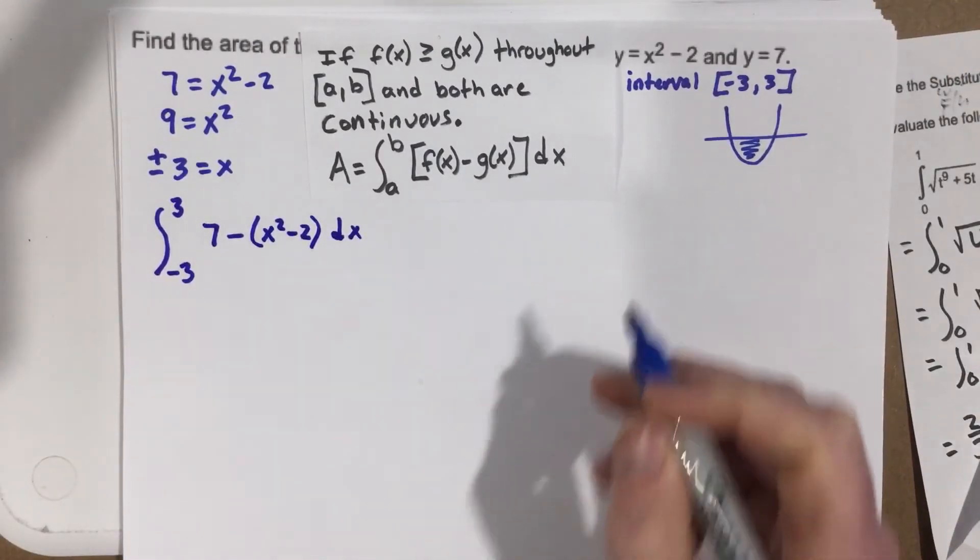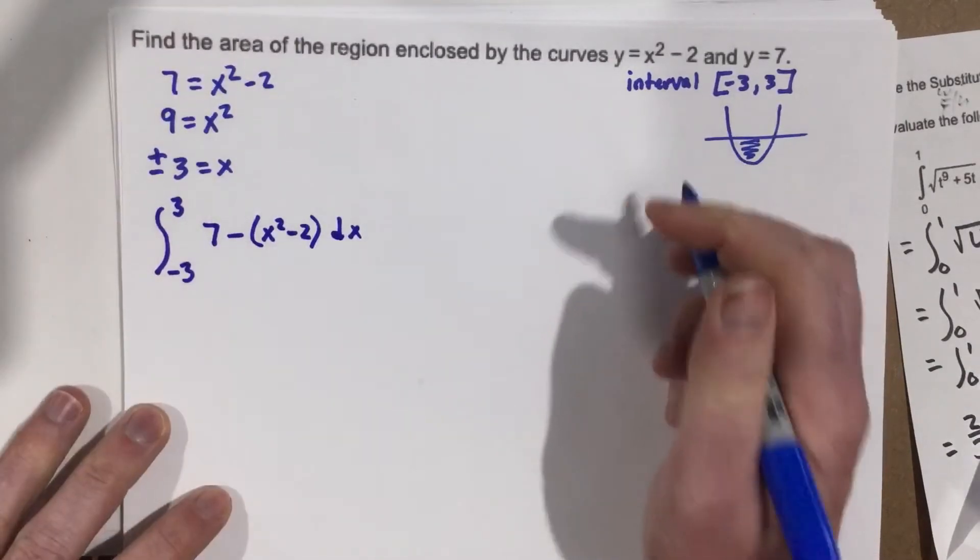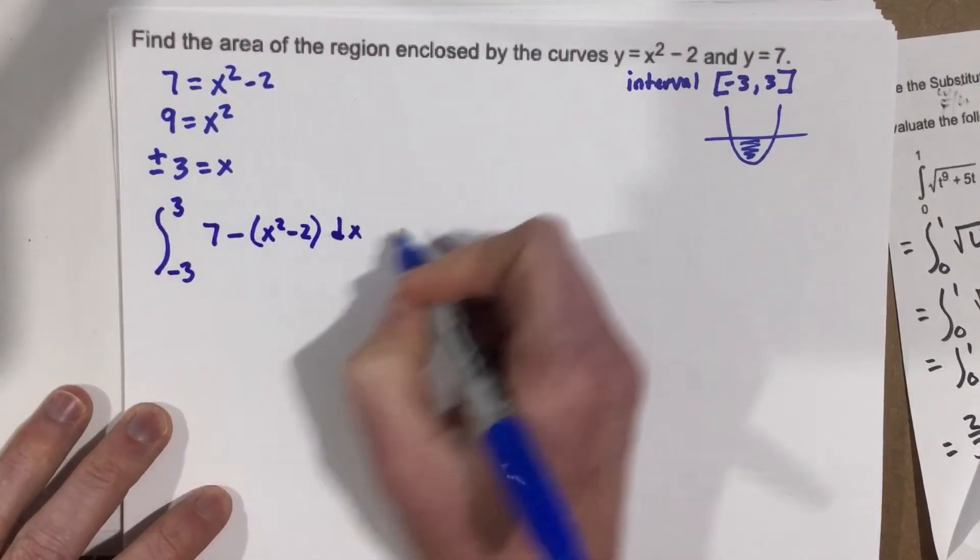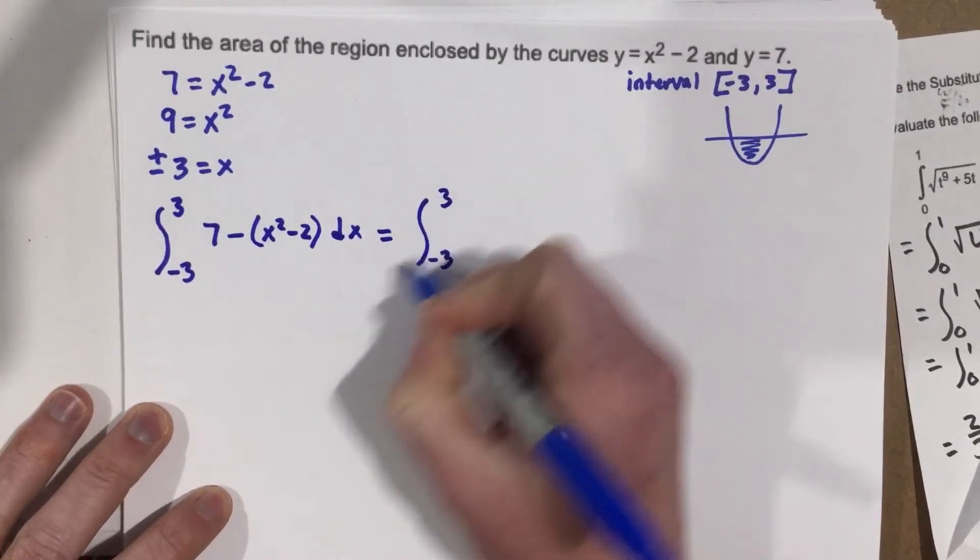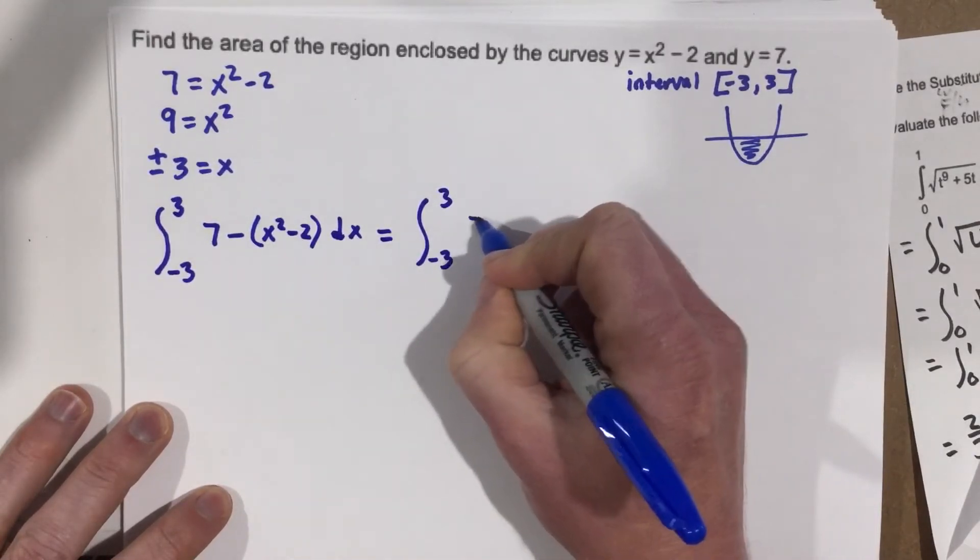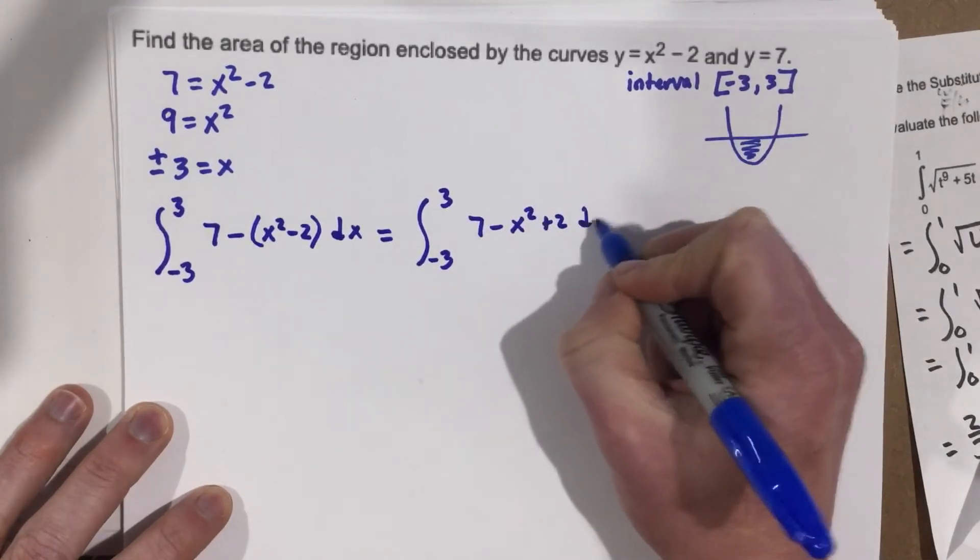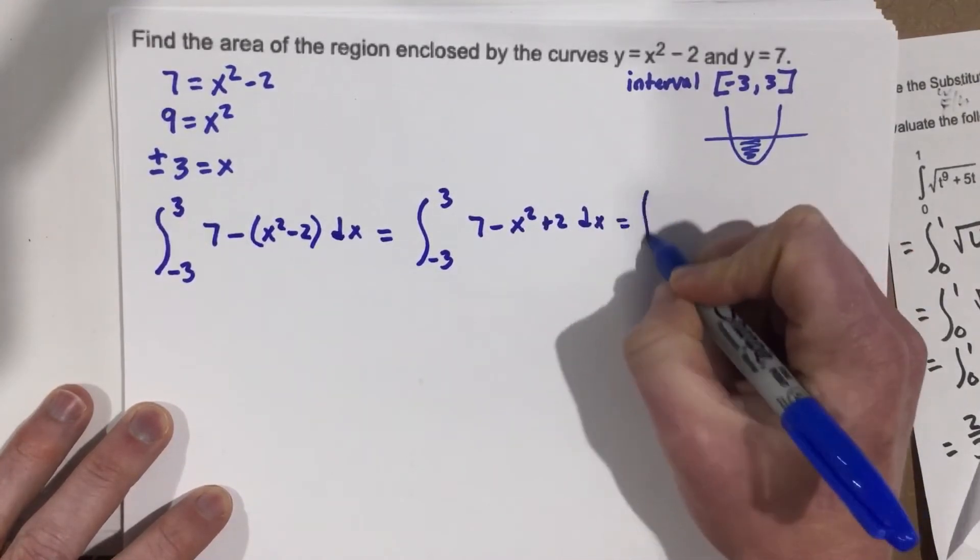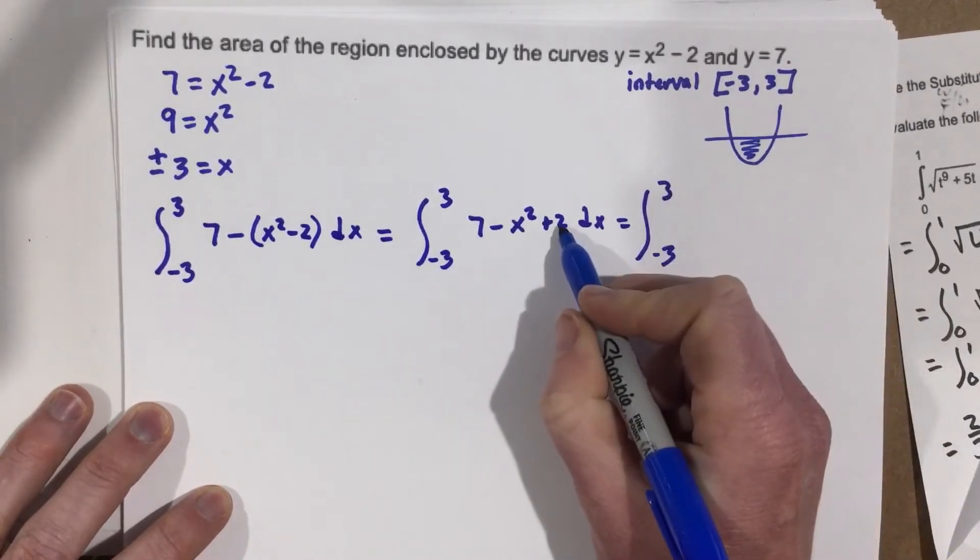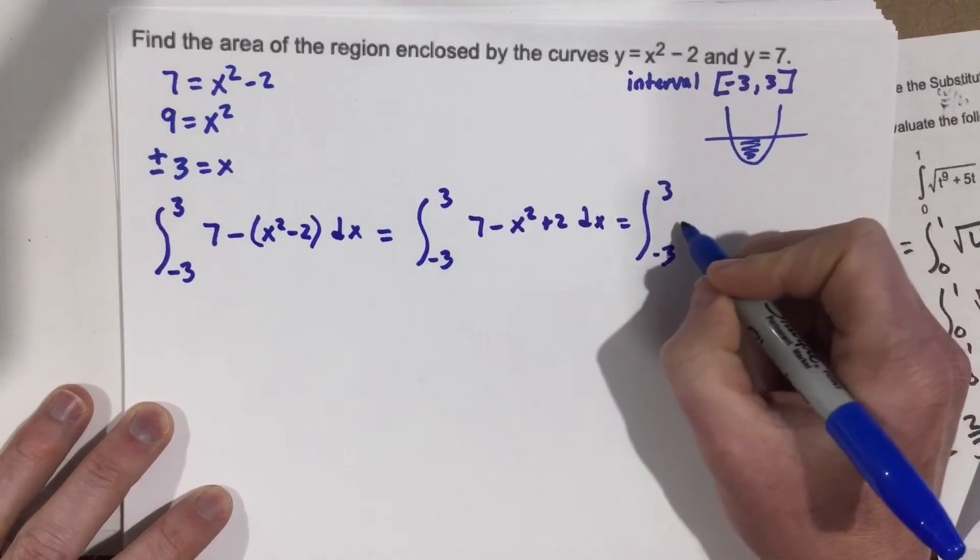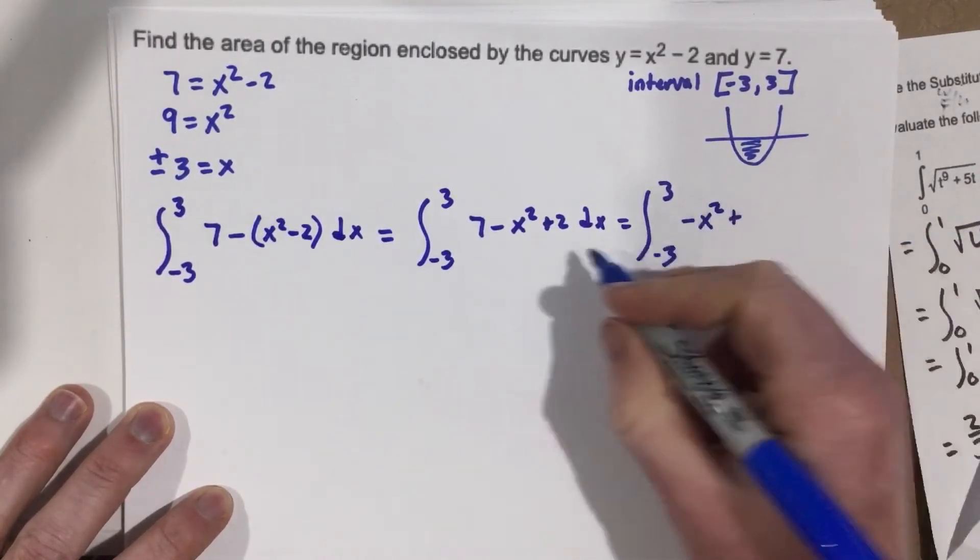Let's see how this works. So we're going to say that this equals the integral from negative 3 to 3. Distribute the negative, so we get 7 minus x squared plus 2 dx. Which is the integral from negative 3 to 3. If we add the 2 and the 7, that would be negative x squared plus 9.